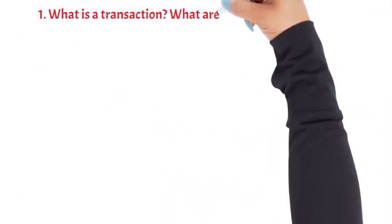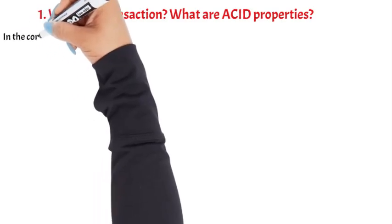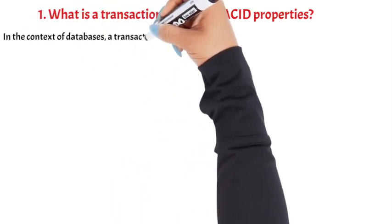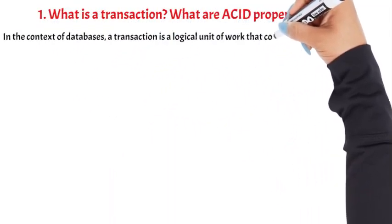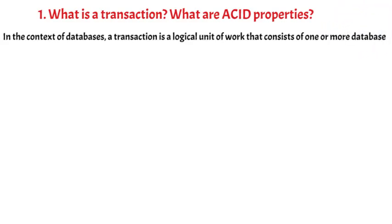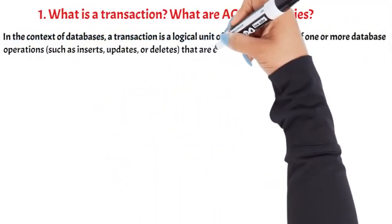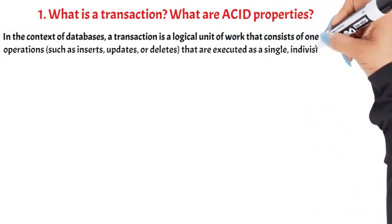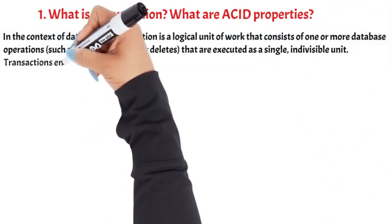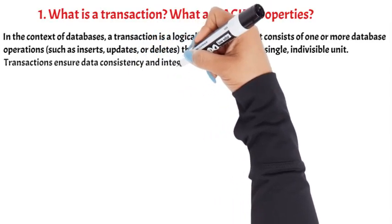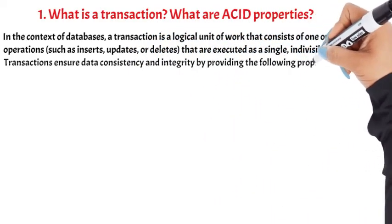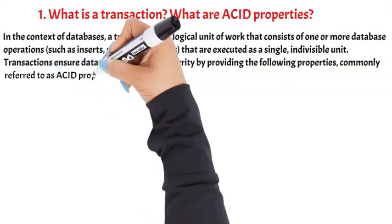What is a transaction? What are ACID properties? In the context of databases, a transaction is a logical unit of work that consists of one or more database operations such as inserts, updates, or deletes that are executed as a single, indivisible unit. Transactions ensure data consistency and integrity by providing the following properties, commonly referred to as ACID properties.